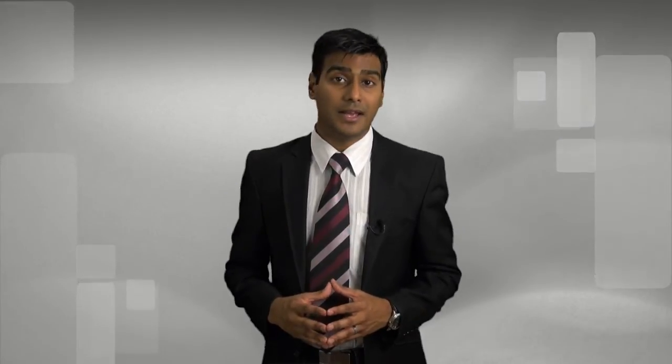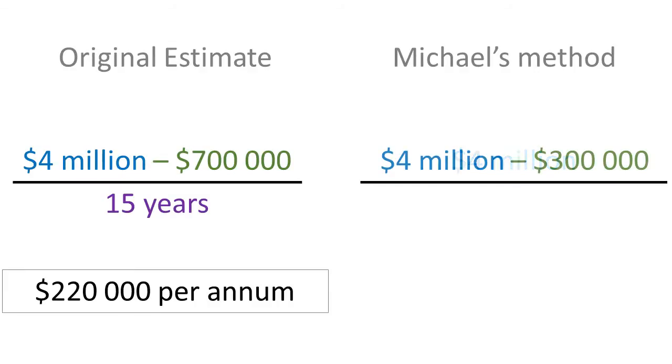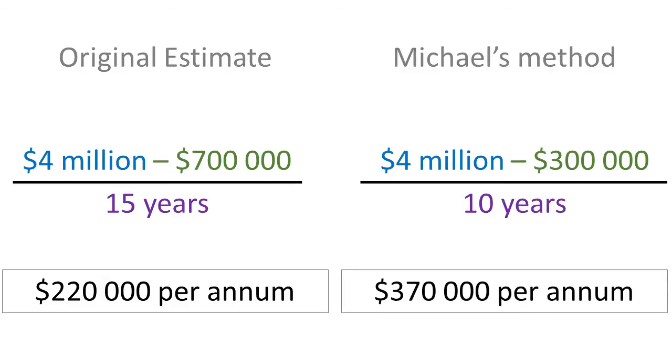On the other hand, Michael wants the profits to be as low as possible in the short term and thus wants the depreciation expense to be as high as possible. Michael sets the residual value at 300,000 dollars and the useful life at 10 years. The depreciation expense that Michael would put through is 370,000 dollars, which will reduce profits considerably.